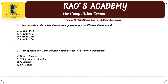The first question was: which article in the Indian Constitution provides for the Election Commission? The correct answer is Article 324. The next question was: who appoints the Chief Election Commissioner? The correct answer is the President of India.